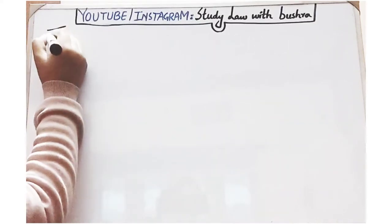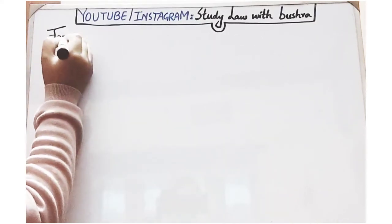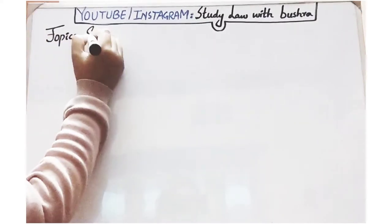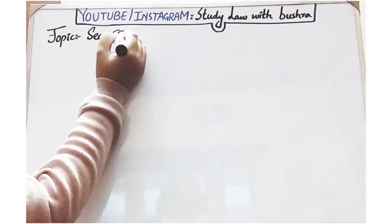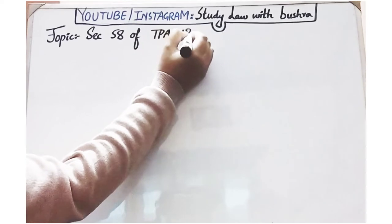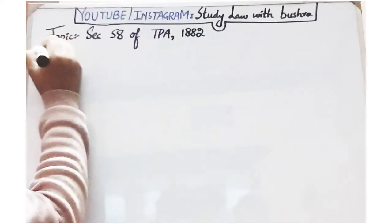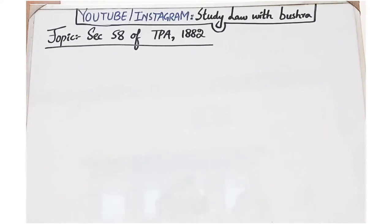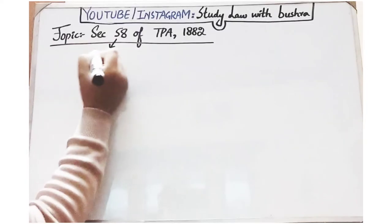Welcome viewers and welcome back to my channel Study Law with Pushtra. In today's video we are going to discuss the topic of Section 58 of Transfer of Property Act 1882. Please subscribe to my channel and don't forget to press the bell icon for latest updates. Do share this video with your friends and don't forget to comment your feedback. So let's move towards the discussion.